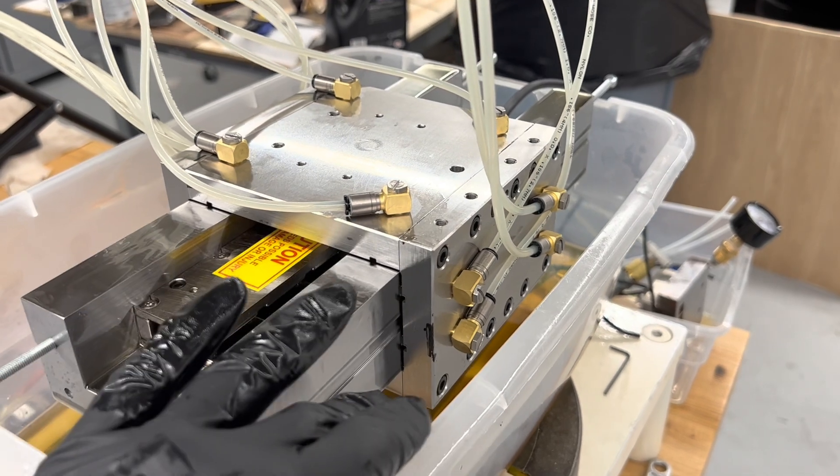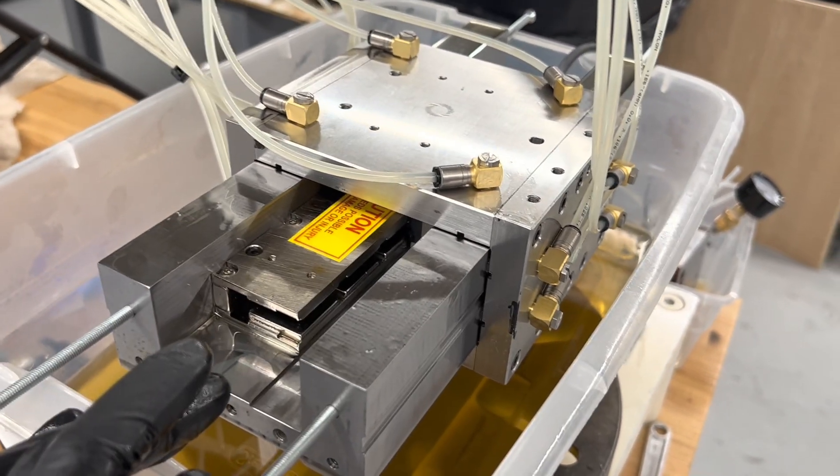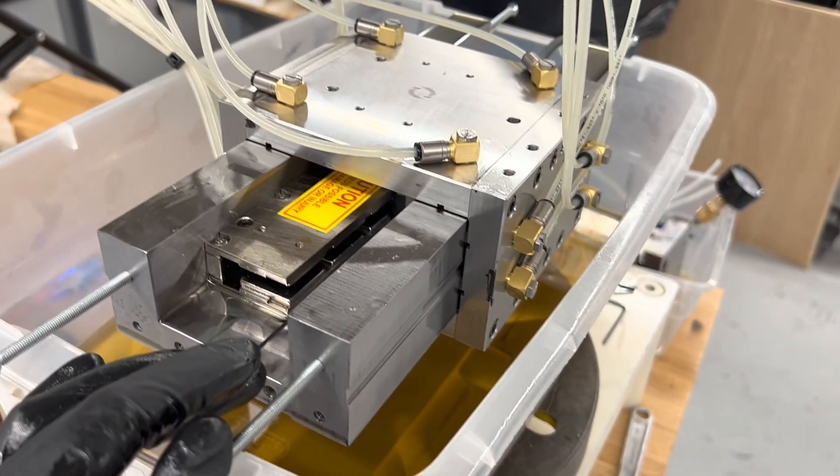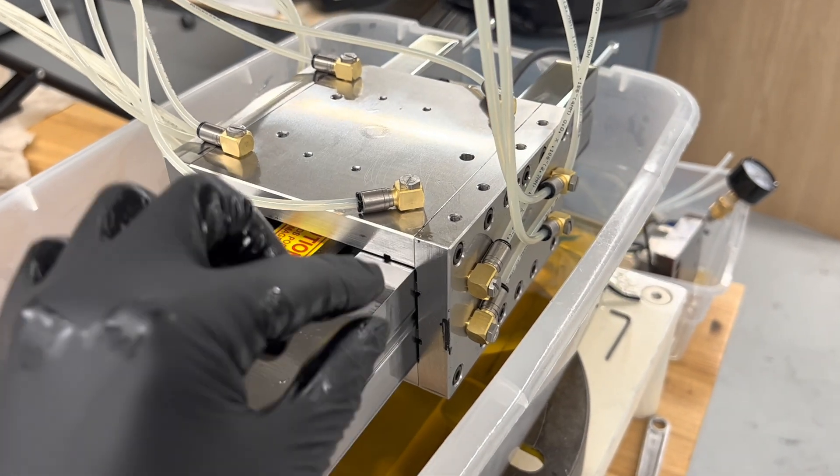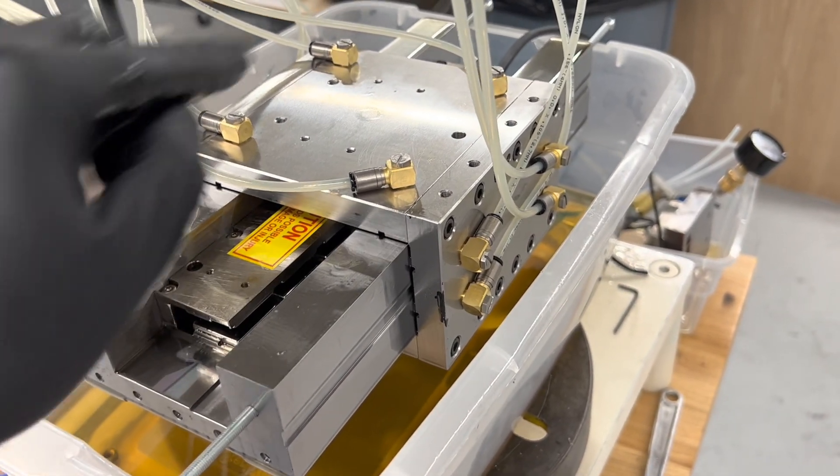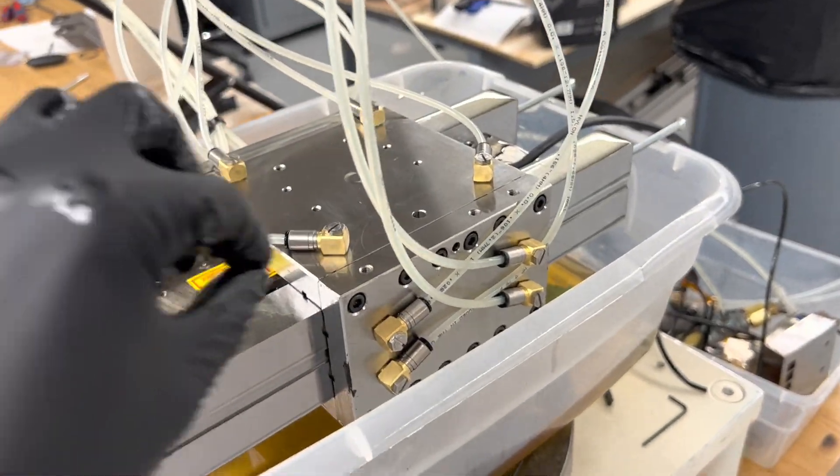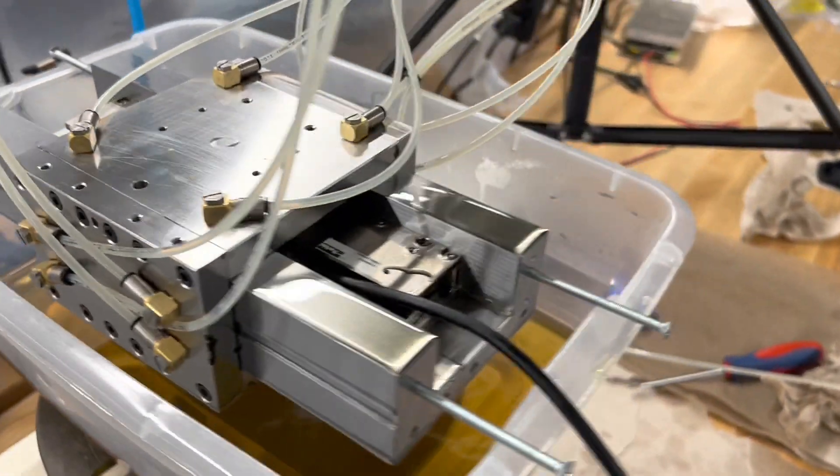The gaps for the top and bottom were actually set with shims, believe it or not. You can get shim stock from McMaster which is accurate to plus or minus 50 millionths, so ended up just cutting some little slips of shims, putting them under all the bearing pads during assembly, clamping it, bolting it together, and then pulling the shims out. So a little bit of a janky way of doing that but seems to be working all right so far.